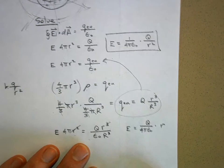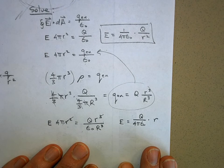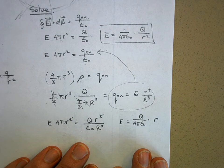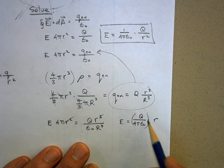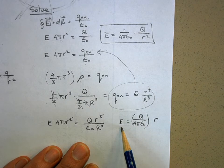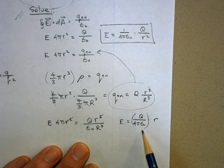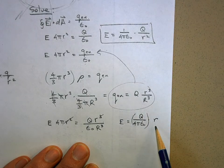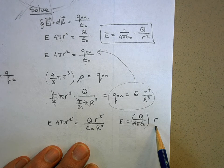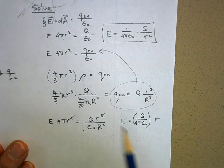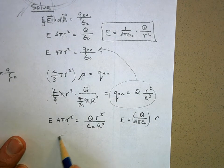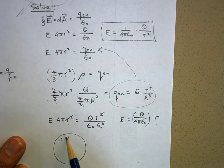Inside the sphere, the electric field increases linearly with the radius r. The q over 4π epsilon naught part is all constant, but the electric field grows linearly with how far you are from the center. Dimensionally this still works out to kq over r² units because the extra r in the numerator cancels one power of R³, leaving r² in the denominator overall.